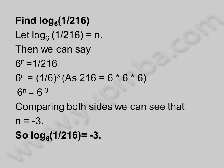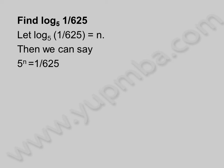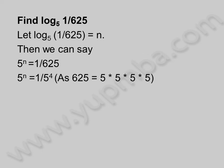Let us see another example. Find log 1 by 625 to the base 5. Let log 1 by 625 to the base 5 be equal to n. Then we can say 5 power n is equal to 1 by 625. 5 power n is equal to 1 by 5 power 4, as 625 is equal to 5 into 5 into 5 into 5. So 5 power n is equal to 5 power minus 4.